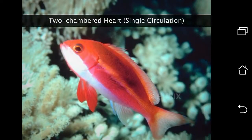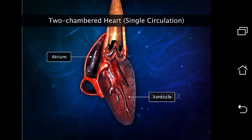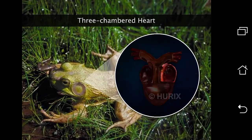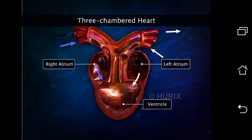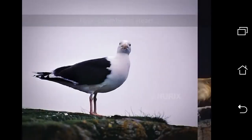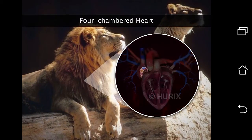Fishes have a two-chambered heart. Amphibians and most reptiles have a three-chambered heart. Birds and mammals have a four-chambered heart.